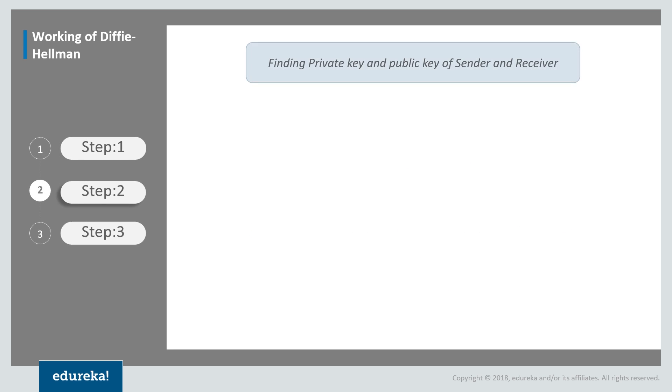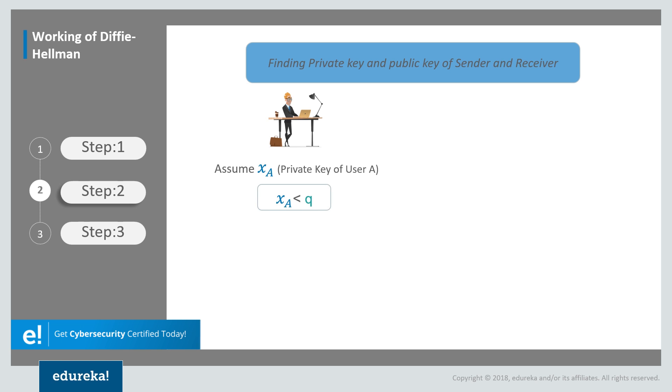After selecting Alpha, the next step is to find the private and public keys of the sender and receiver. First assume private key of user A. While assuming the private key we have to make sure that it's less than Q, and then we calculate the public key of user A, which is denoted by YA, given by this formula. To calculate the public key we use the formula which is Alpha raised to the private key of the user modded by Q.